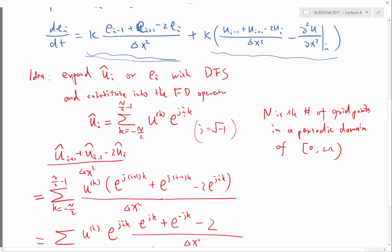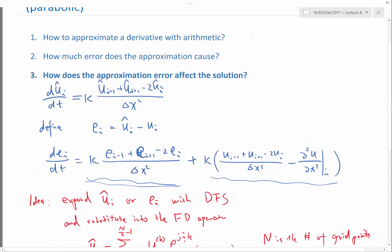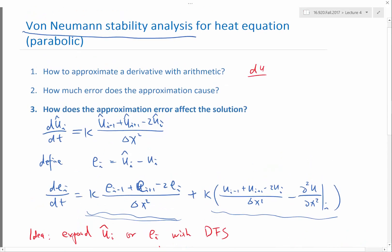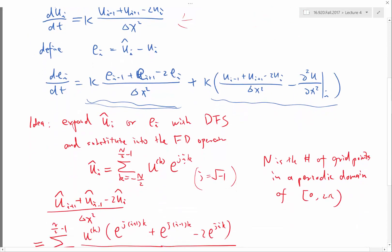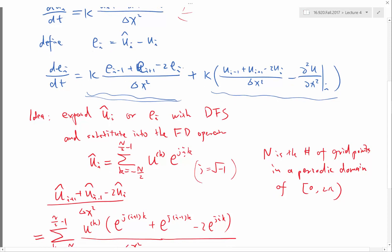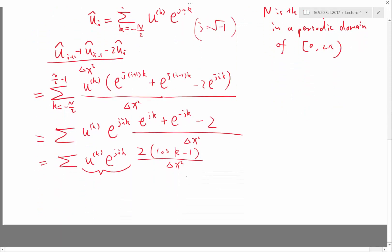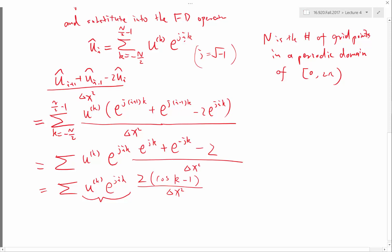A student asks about the left-hand side. The speaker explains: on the left-hand side it is the derivative with respect to t, because we started from the heat equation — partial u over partial t equals kappa times partial² u over partial x². We discretized space first without considering time discretization yet. After spatial discretization we derived this finite difference equation, and now we're asking: is this discretization stable? Will the error introduced by the finite difference operator amplify or not?